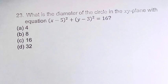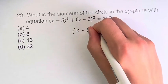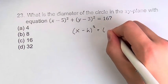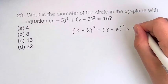To solve this problem we have to understand how the equation of a circle is constructed. Generally it's x minus h squared plus y minus k squared is equal to r squared.